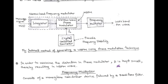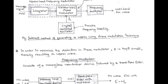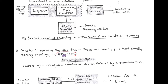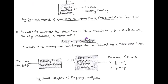However, there is a problem in the indirect method. There is a possibility of distortion in the phase modulator. In order to minimize this distortion, the modulation index β should be kept small. When β is small, the result is a narrow band FM wave. To then obtain wide band FM, we use a circuit called the frequency multiplier.